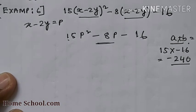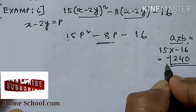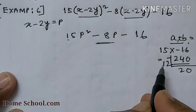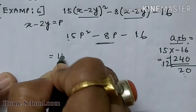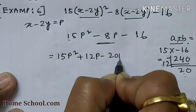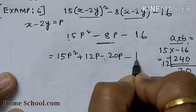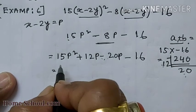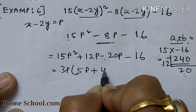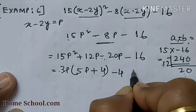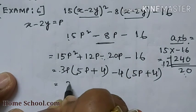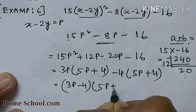We need to find two integers a and b such that a + b = −8 and a × b = −240. Doing the LCM of 240, we find 12 and 20 — because −20 + 12 = −8. We write 15p² + 12p − 20p − 16. Taking 3p common gives 3p(5p + 4). Taking −4 common gives −4(5p + 4). So the answer is (3p − 4)(5p + 4).